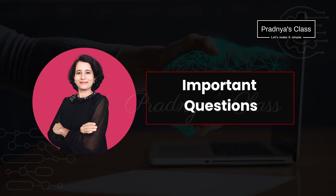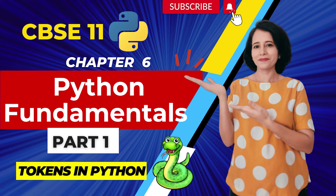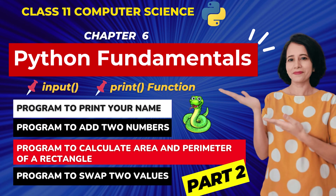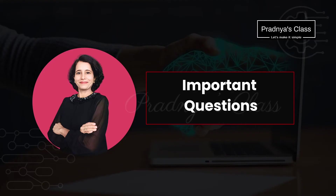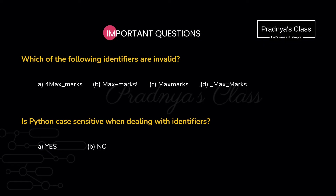I think we have covered all the topics necessary to solve the questions. I would highly recommend you to go through the video where we covered all the topics in detail. Now it's time to check out the questions. The first format will be MCQs. Let's check out which of the following identifiers are invalid — these type of questions are very important and you will be getting them in the board exam too. Look at the first option — the starting character is a digit, that's why this is invalid.